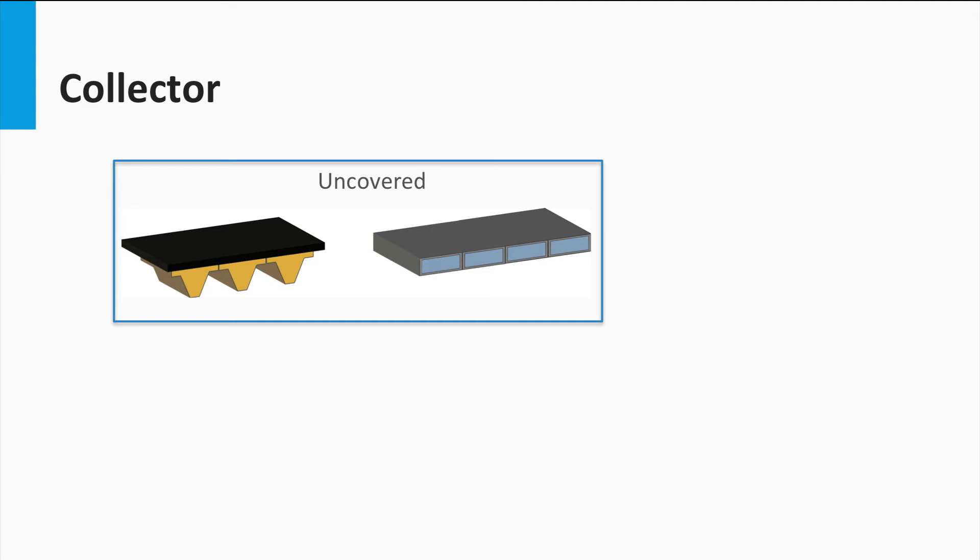Uncovered collectors don't have a transparent cover, so the sun strikes directly in the absorber surface, avoiding a good fraction of the reflection losses. It is used only for small differences in temperature with respect to ambient temperature, such as the ones in swimming pools.